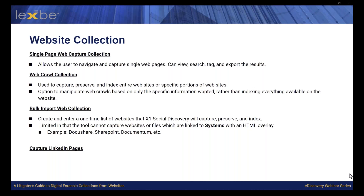With the X1 Social Discovery forensic tool, there are different methods we can use to collect a web page. The first method is a single page web capture collection, which allows us to navigate and capture a single web page; after collection we can view, search, tag, and export the desired results. Another method is a web crawl collection, which captures, preserves, and indexes an entire website or specific portions of the website. We can also manipulate the web crawl based on specified information rather than indexing everything — so if only certain items on a website are needed, we can collect just those items.